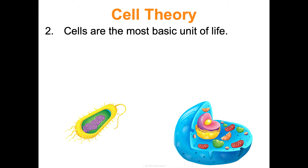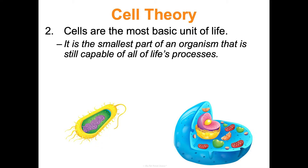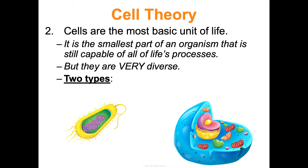Cells are the most basic unit of life — the smallest part of an organism still capable of all of life's processes. But just because it's this basic unit doesn't mean cells aren't diverse. There are two broad categories: prokaryotic cells and eukaryotic cells, and even within these categories, they're diverse.